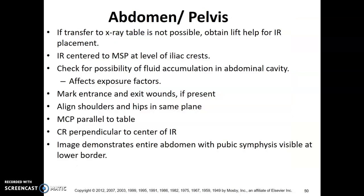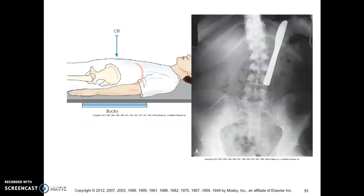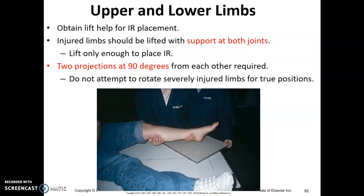Abdomen and pelvis — a lot of times you're looking for foreign body. You know how to do a KUB. KUB on the stretcher is the same as KUB on the table.